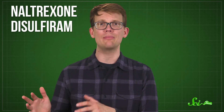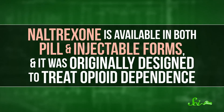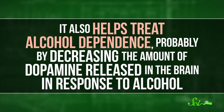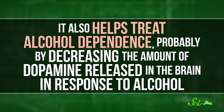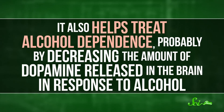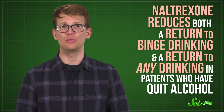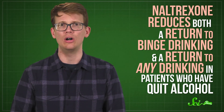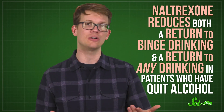While therapy in all its various forms can really help people, it's also not the only option. In the US, there are a handful of drugs that are approved to treat alcohol use disorder, including naltrexone, disulfiram, and acamprosate. Naltrexone is available in both pill and injectable forms, and it was originally designed to treat opioid dependence. It also helps treat alcohol dependence, probably by decreasing the amount of dopamine released in the brain in response to alcohol, making it feel less rewarding to drink. Multiple studies have shown that naltrexone reduces both a return to binge drinking and a return to any drinking in patients who have quit alcohol.